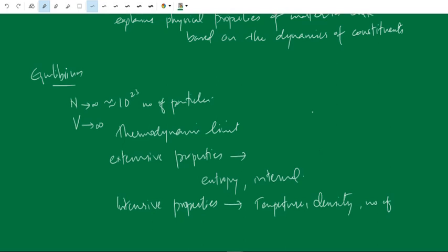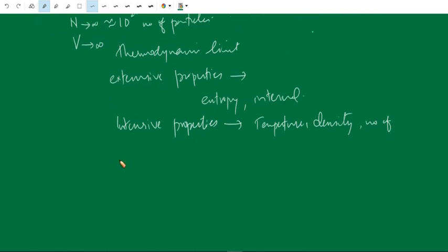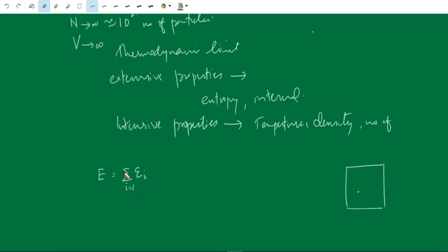Now we consider the total energy of the system. If the system contains a large number of non-interacting particles — two particles not interacting means the potential energy between the two particles is zero — then the total energy E is equal to the sum of all the energies of the individual particles, that is, summation of ε_i.